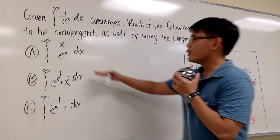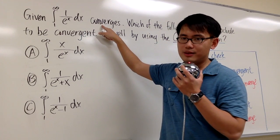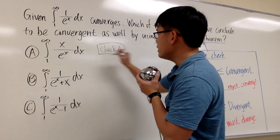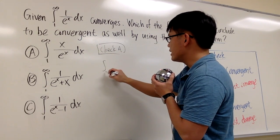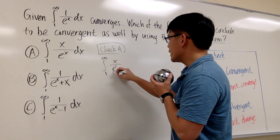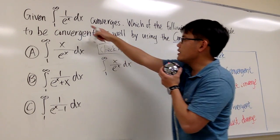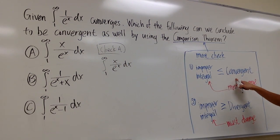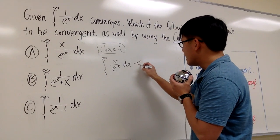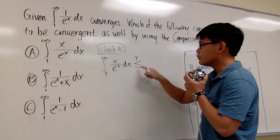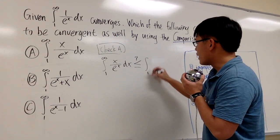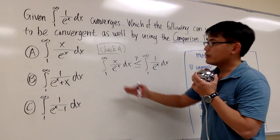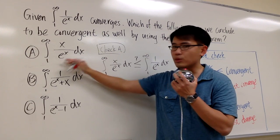Now what we need to do is compare all three choices with the given convergent integral, just checking the inequalities. For choice A, the integral is the integral from 1 to infinity of x over e to the x dx. I would like to know if this is less than or equal to the convergent we already know: the integral from 1 to infinity of 1 over e to the x dx. If that's true, it would imply choice A also converges.